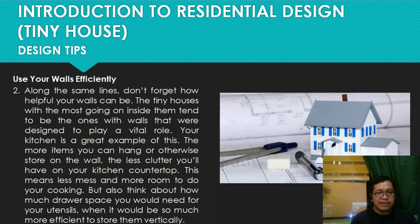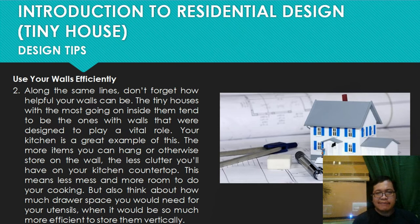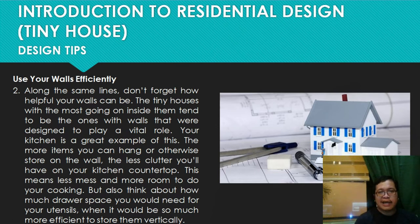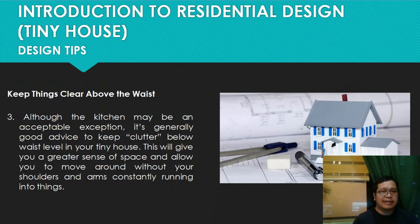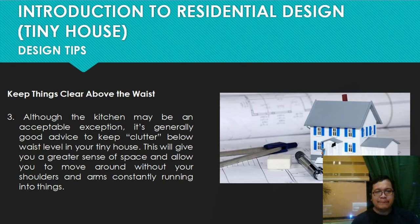Next, use your walls efficiently. Don't forget how helpful your walls can be. Tiny houses with the most going on inside tend to be the ones with walls designed to play a vital role. The kitchen is a great example — the more items you can hang or store on the wall, the less clutter you'll have on your countertop, meaning less mess and more room to cook. Also think about how much more efficient it is to store utensils on the wall. Next, keep things clear above the waist — it's generally good advice to keep clutter below waist level, which gives a greater sense of space.